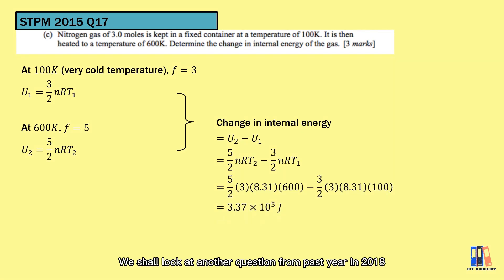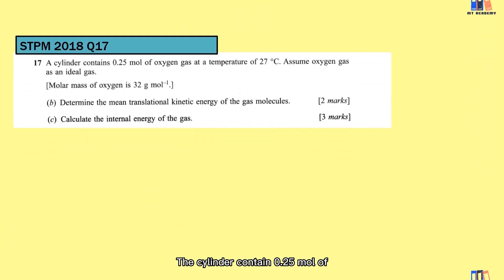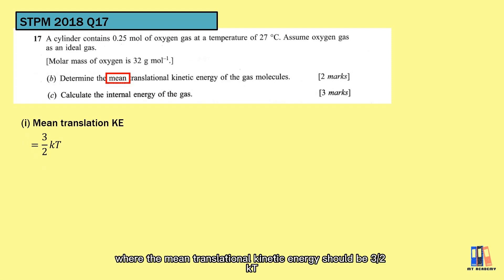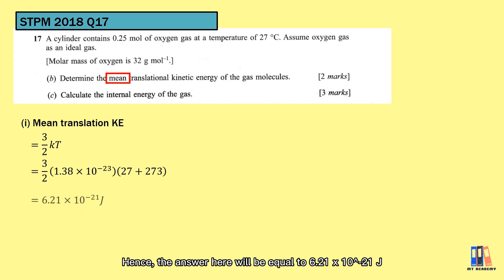We shall look at another question from Parsi in 2018. The cylinder contains 0.25 moles of oxygen gas at a temperature of 27 degrees Celsius. Observe the question B. You should always read the question carefully that it asks for the mean translational kinetic energy of the gas molecule. Although we know that oxygen is a diatomic molecule and it is placed in a room temperature, we shall refer to the formula in the topic 9.3 where the mean translational kinetic energy should be 3 over 2 kT. Hence the answer here would be equal to 6.21 times 10 to the power of negative 21 J.